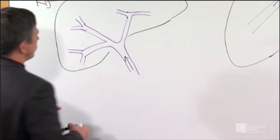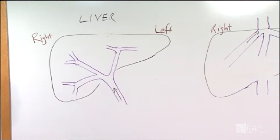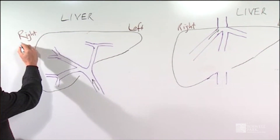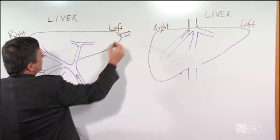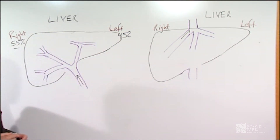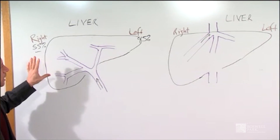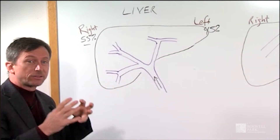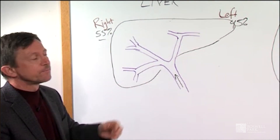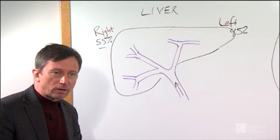The liver has both a right side and a left side. The right side is generally the larger part — about 55% of the liver volume is on the right side and about 45% on the left side. As most people may or may not know, the liver can regenerate. In a healthy younger person, you can remove up to as much as 75% of a healthy liver, and the other 25% will essentially grow back.